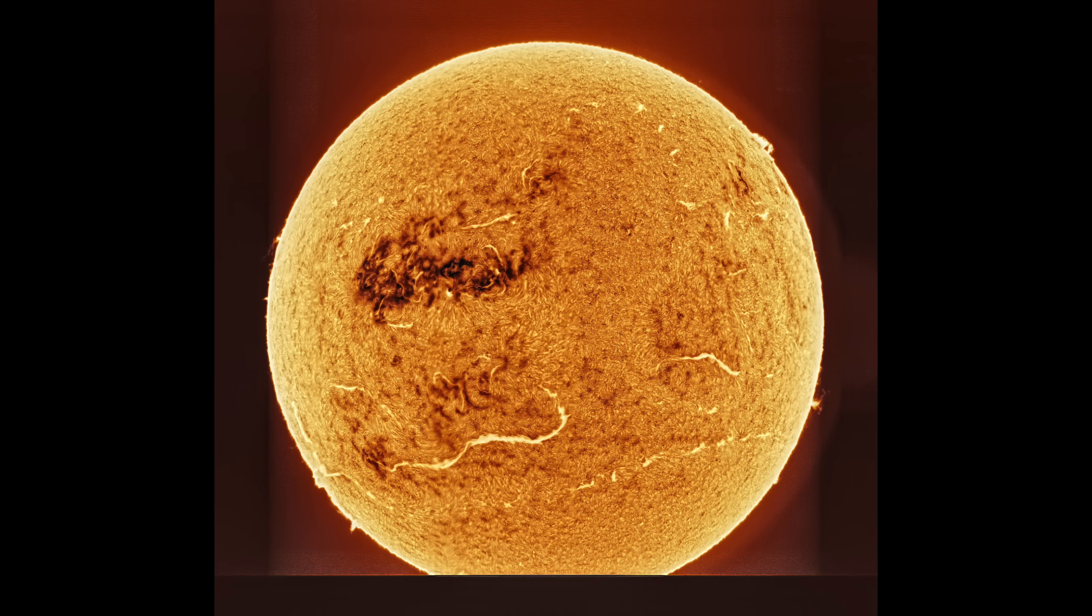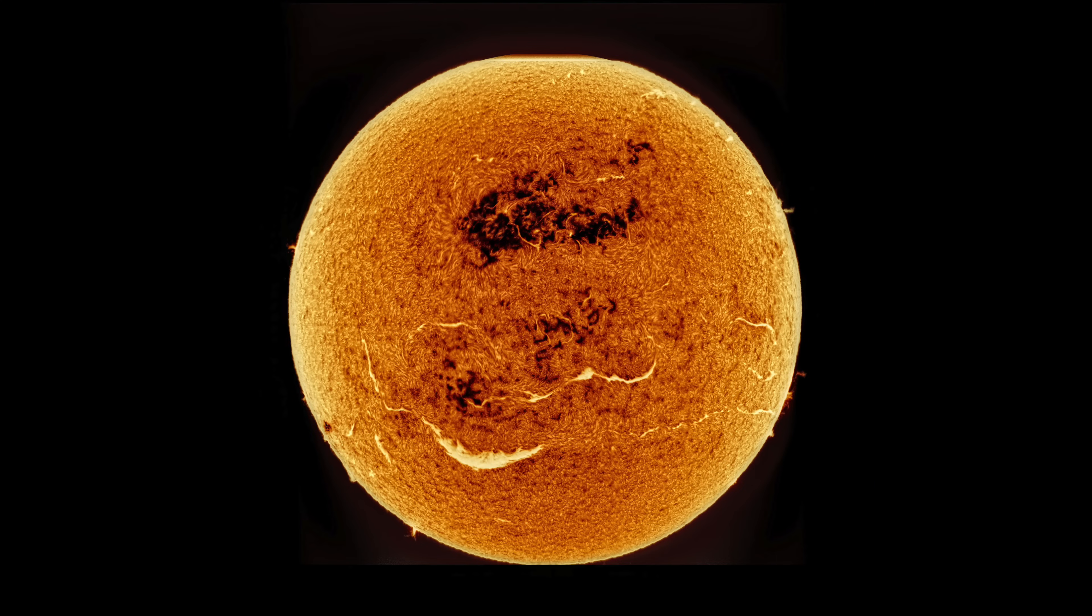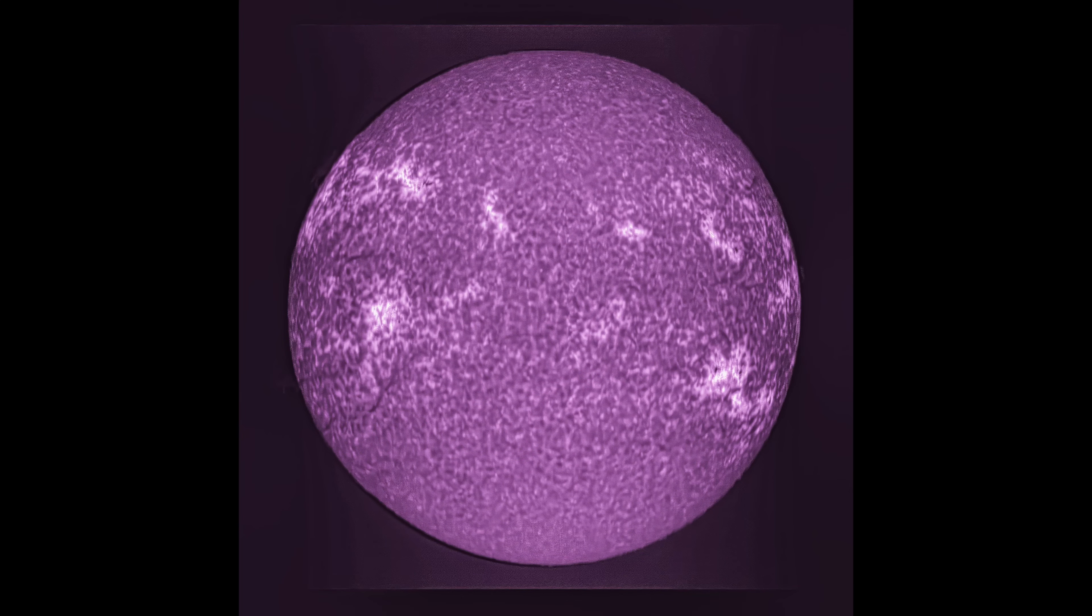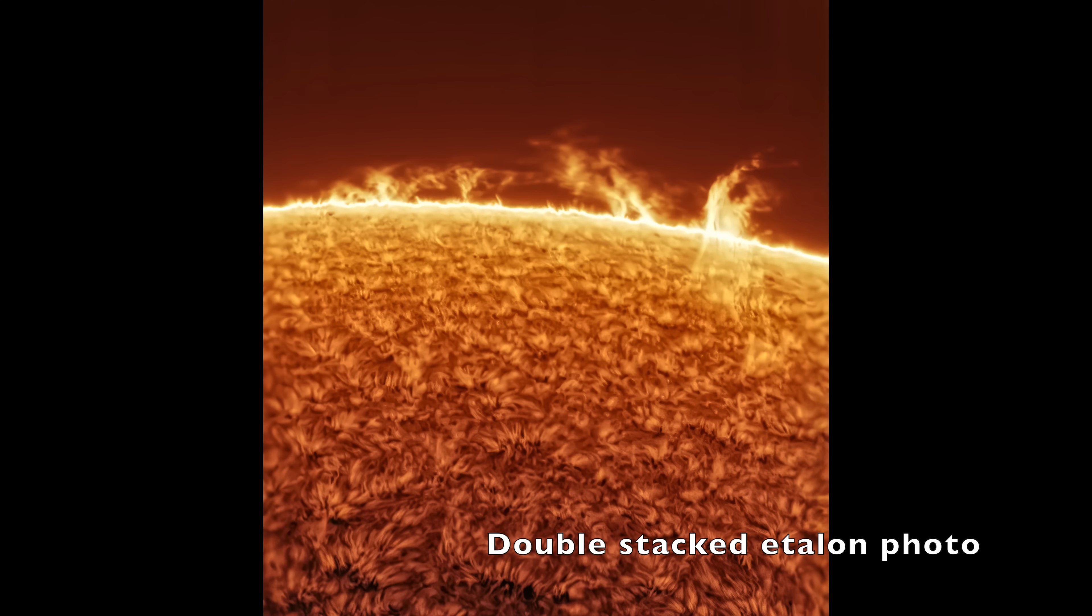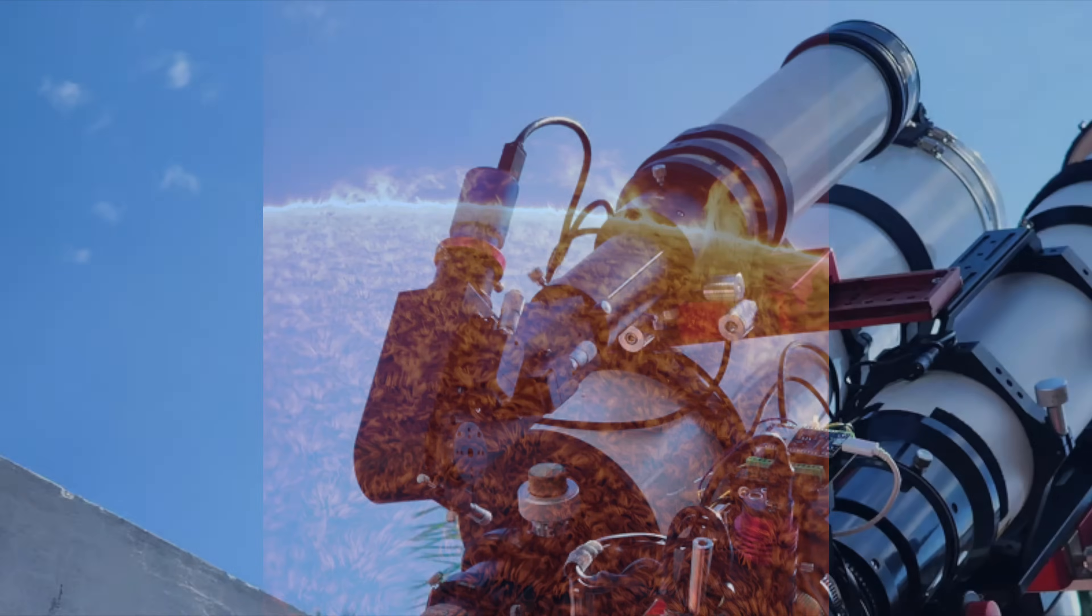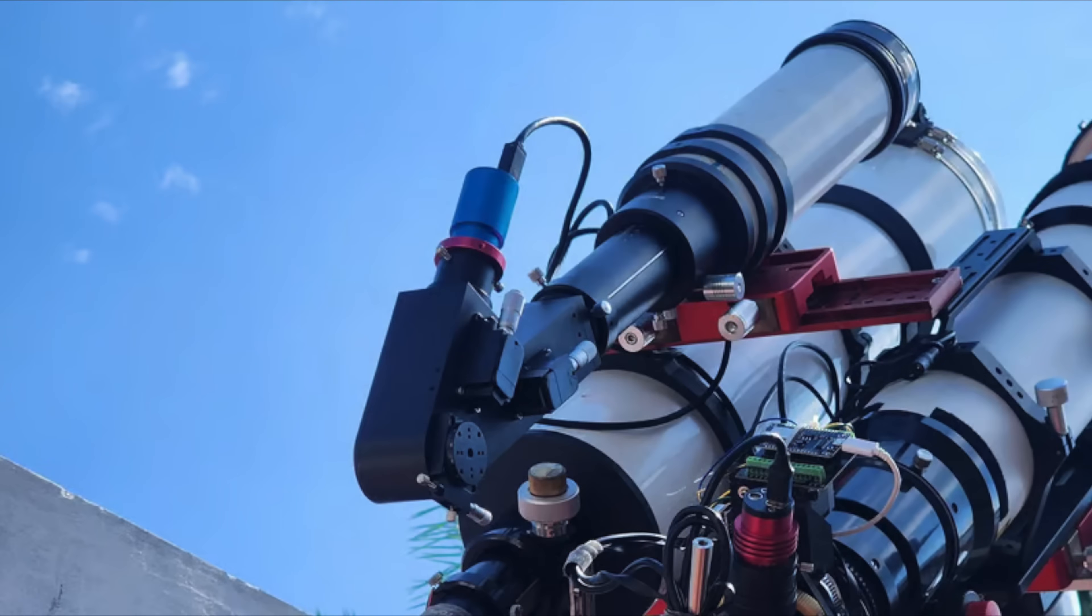Spectroheliographs will give you a beautiful full-disc solar image with crisp filaments and surface details. You can see multiple wavelengths, for example, hydrogen alpha, calcium k, helium d3, etc., whereas an etalon system can only display hydrogen alpha. And finally, it can be used with your existing refractor telescope.